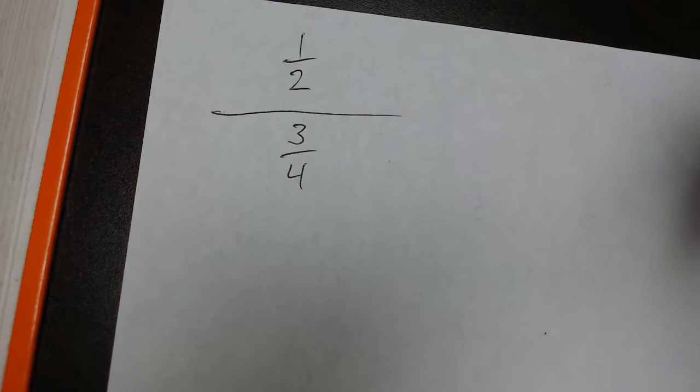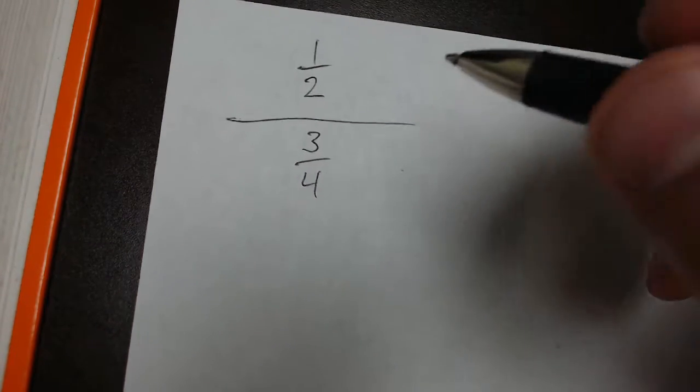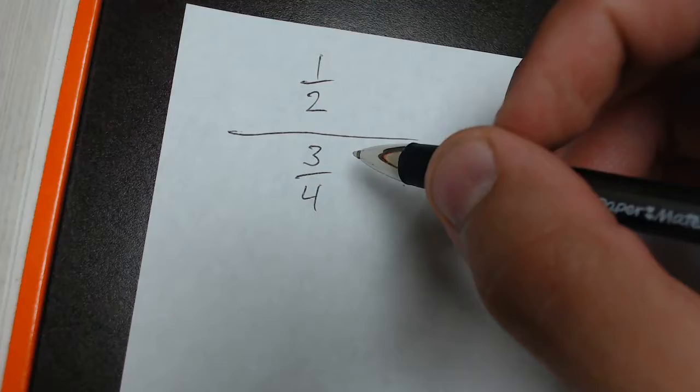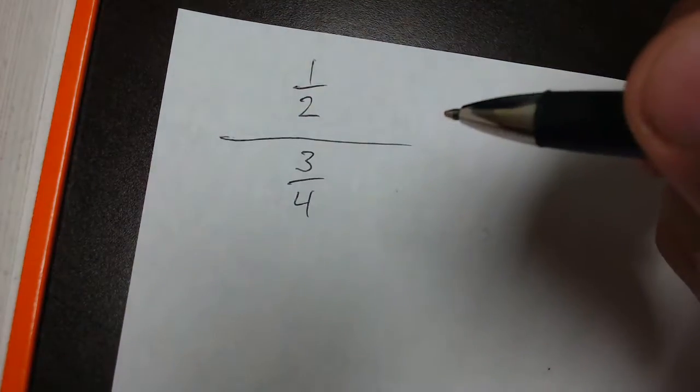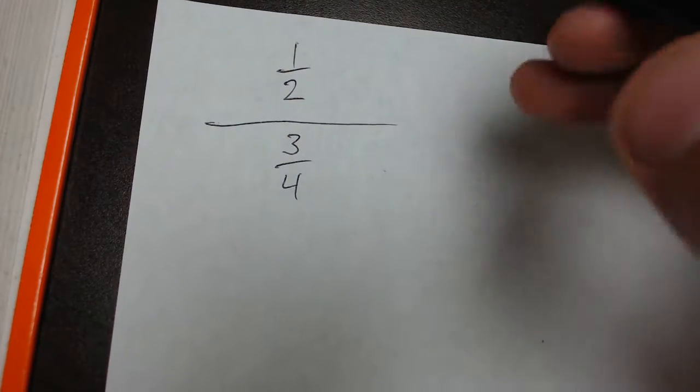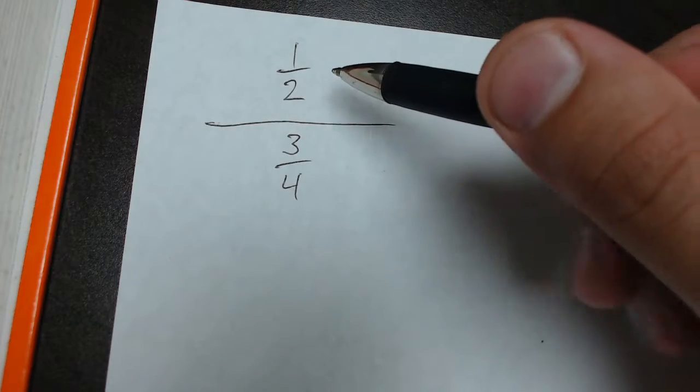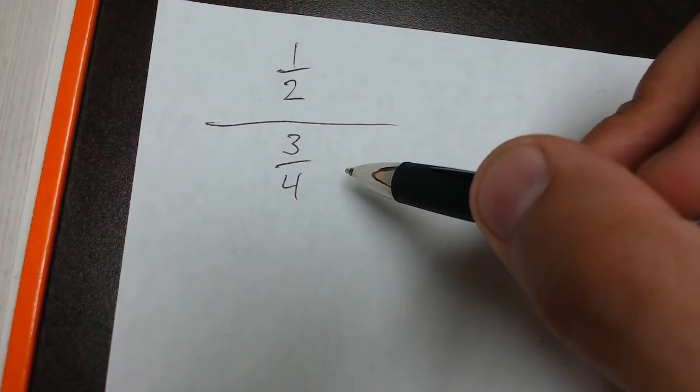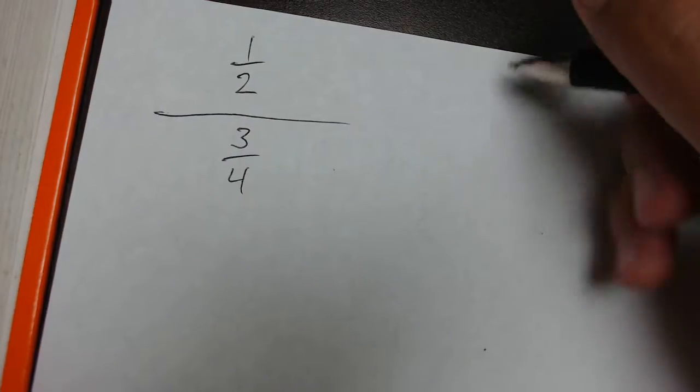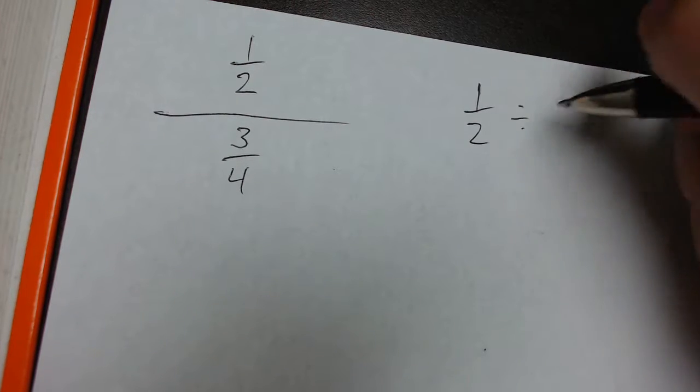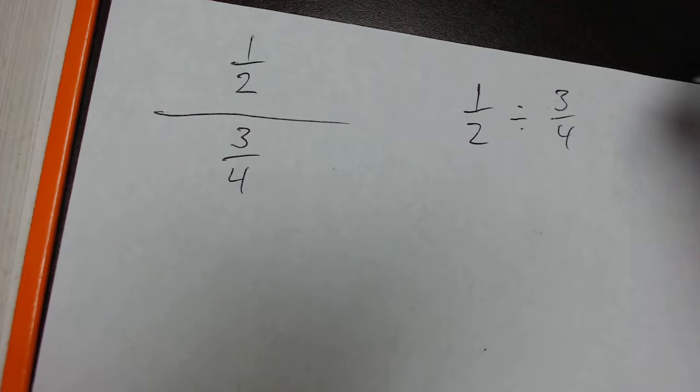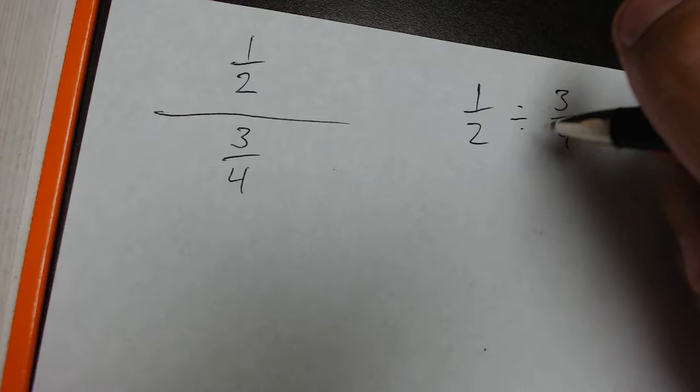The easiest way to simplify complex fractions is to use our division rules of fractions or to remember that fractions are the same operation as division. Another way we could read this fraction is 1 half divided by 3 fourths. If we were to take 1 half and divide it by 3 fourths, that would be the same as inverting and multiplying by the denominator.